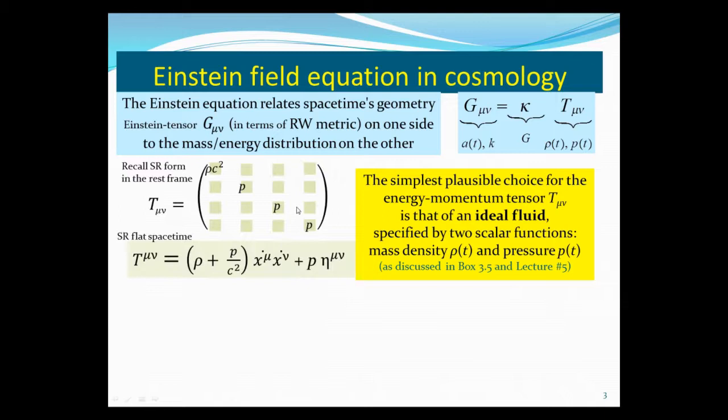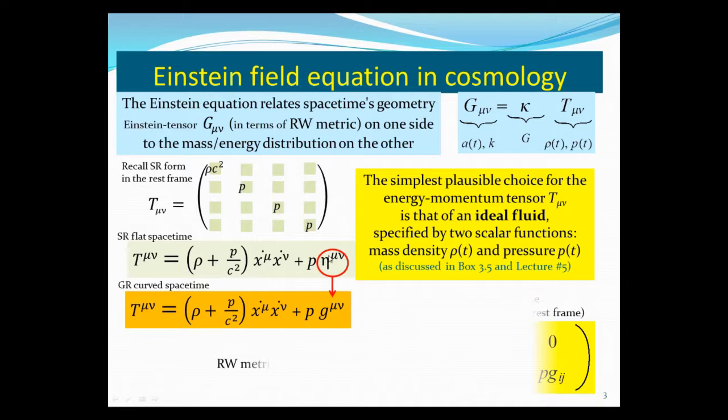Which in the comoving frame has only diagonal elements: the 1,1, 2,2, 3,3 components are pressure, and the 0,0 component is the rest energy density, ρc². And this can be written in special relativity in the tensor form as (ρ + P/c²)U_μU_ν + P η_μν. Going from special relativity to general relativity, the curved spacetime simply replaces the flat metric η_μν by the curved g_μν. In our case, the Robertson-Walker metric.